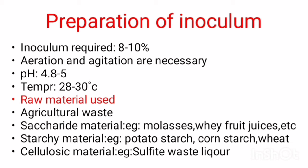Three types of substrates are used for ethanol production. First one, saccharide material; second one, starchy material; and third one, cellulosic material. Saccharide material is derived from sugar cane, molasses, or sugar beet. These are the examples for the saccharide material.